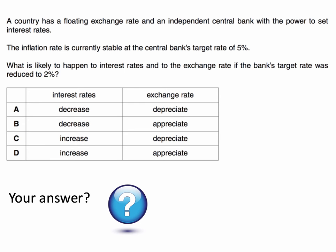A country has a floating exchange rate and an independent central bank with the power to set their own interest rates. The inflation rate is currently stable at the central bank's target rate of 5%. What is likely to happen to interest rates and to the exchange rate if the bank's target inflation rate was reduced to 2%? Press the pause button to think about your answer and have a think about what you think the correct answer is.